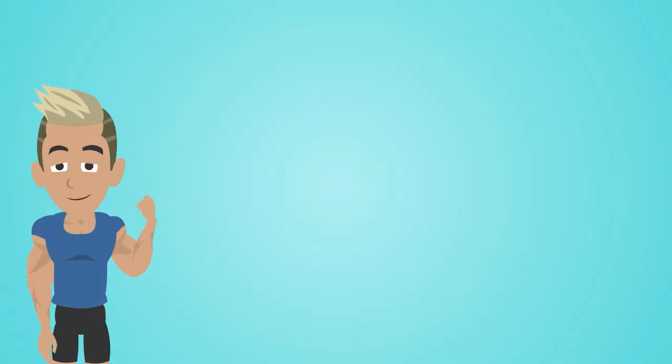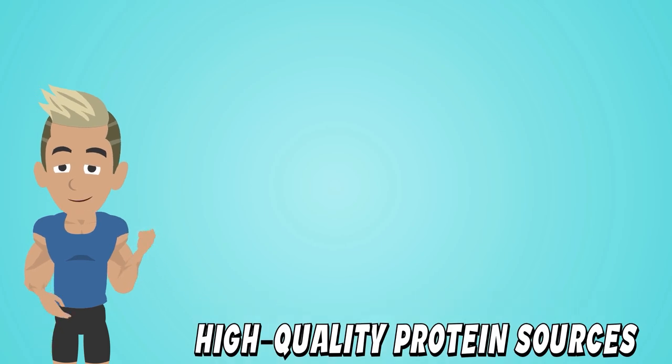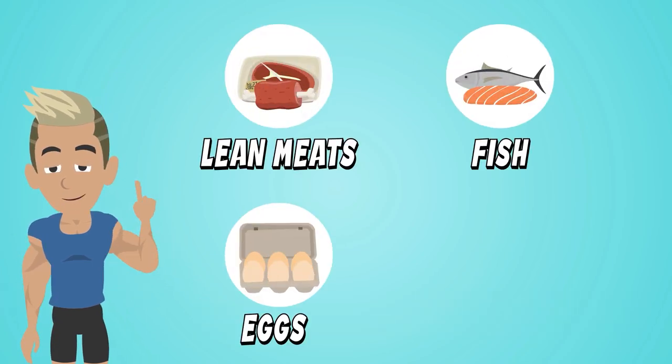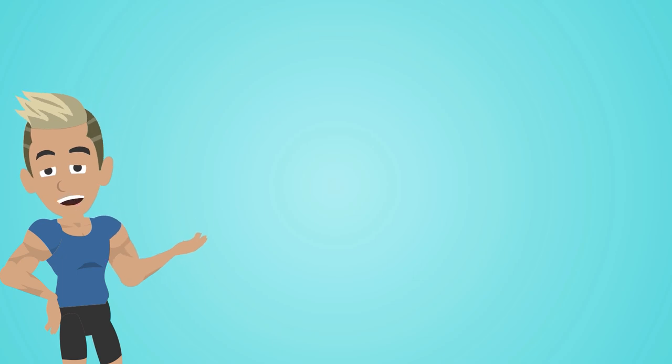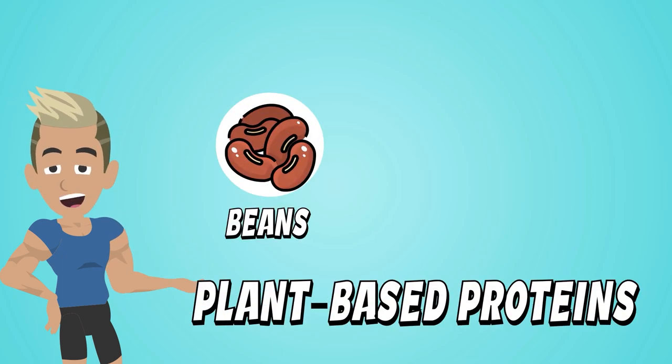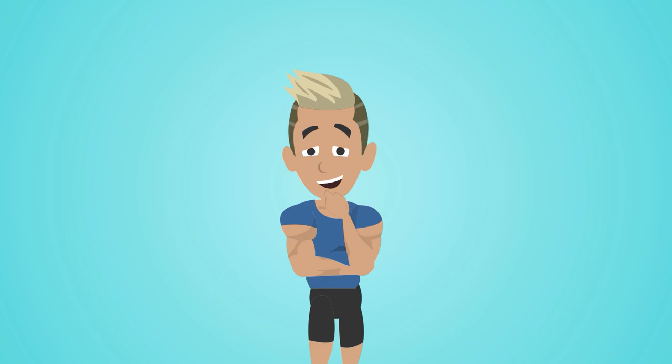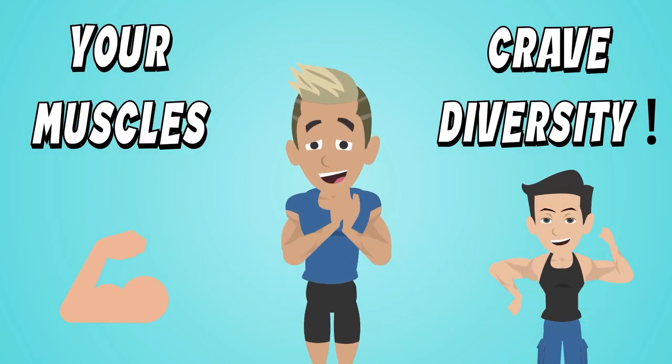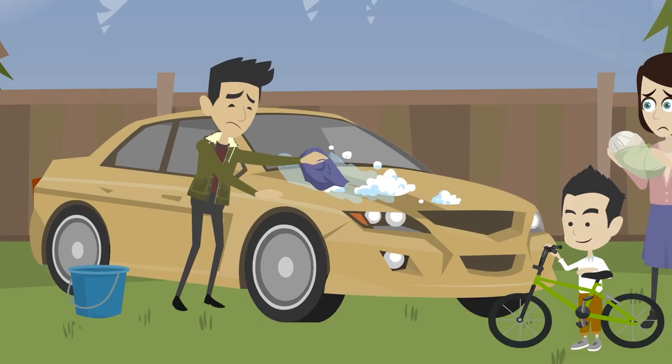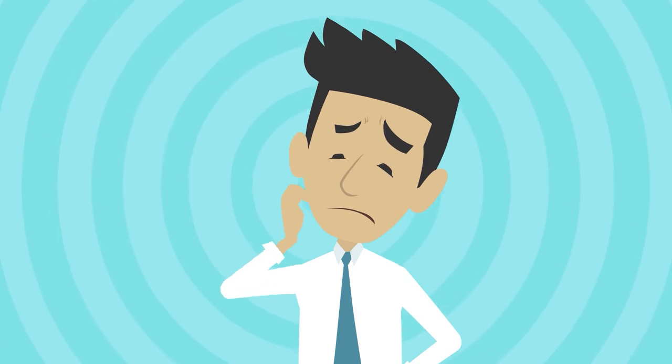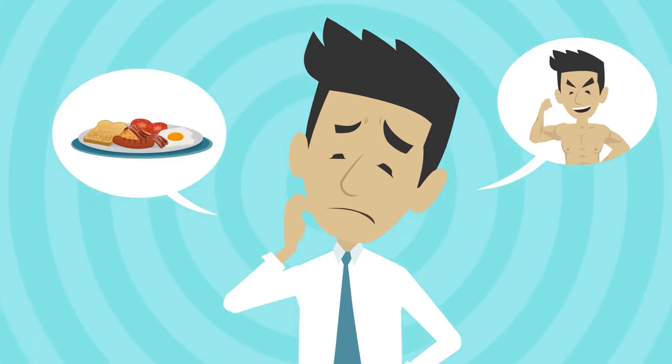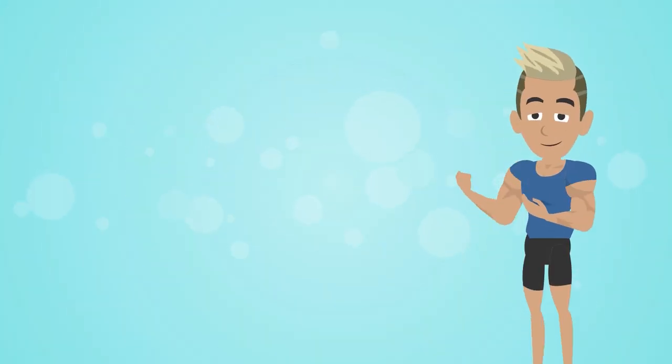It's not just about the quantity - quality and variety are the spices of muscle growth. Seek out high quality protein sources like lean meats, fish, eggs, and dairy. Don't forget to mix it up with plant-based options like beans, lentils, and tofu. Your muscles crave diversity.